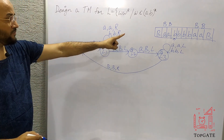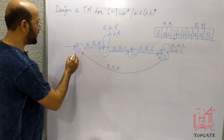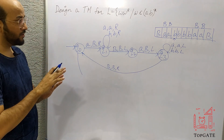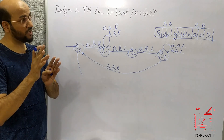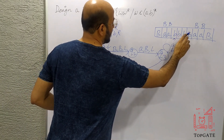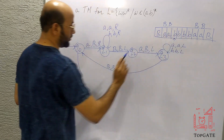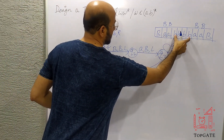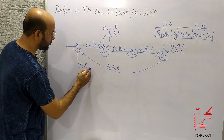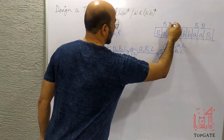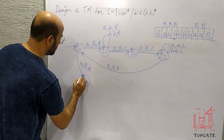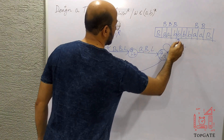Now at Q0, I am finding a B — but I have a move only for A so far. So I add a move for B at Q0: if you find B, change it to capital-B and move right to state Q4. So this B is changed to capital-B, and the pointer moves right to the next B.